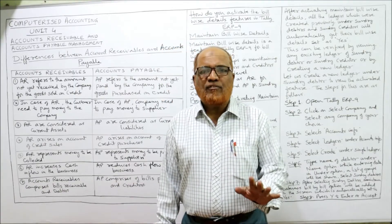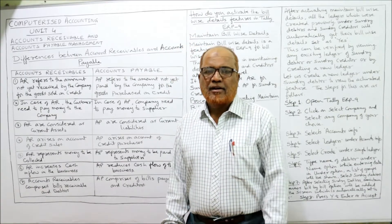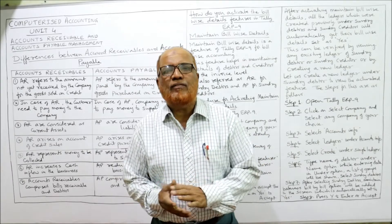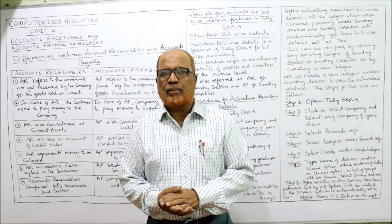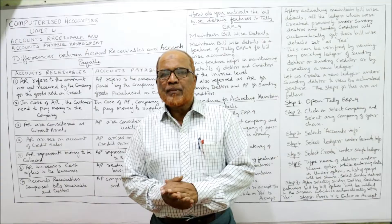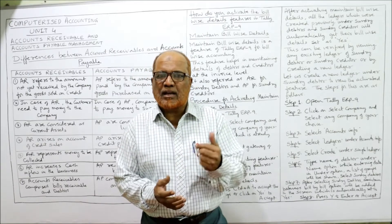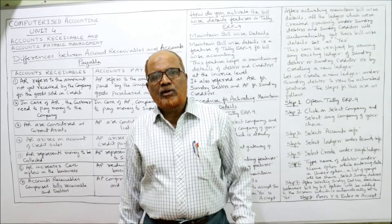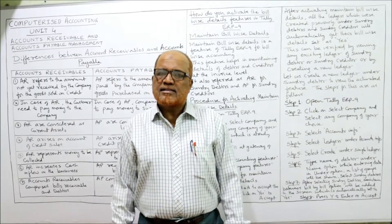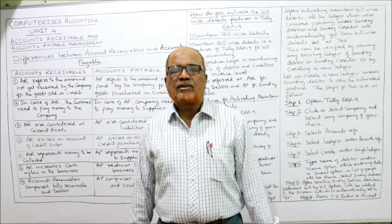This is unit number four regarding management of accounts receivable and accounts payable. In the last three videos I explained the meaning of accounts receivable and accounts payable, their advantages, and the advantages of bill-wise details. If you haven't watched those, go to the playlist and select computerized accounting unit four.